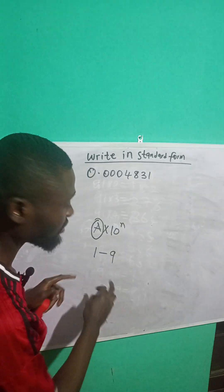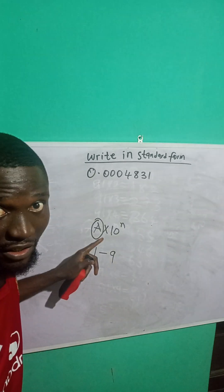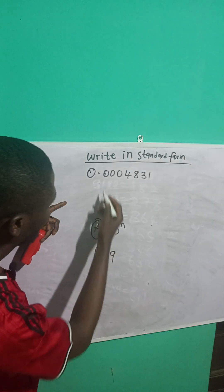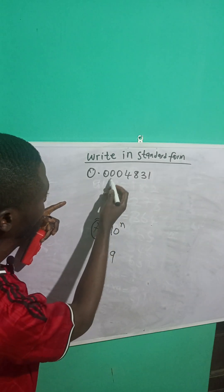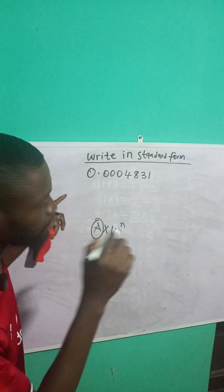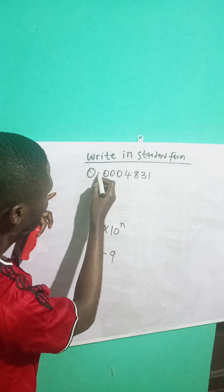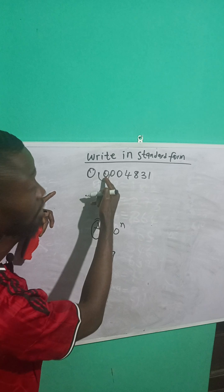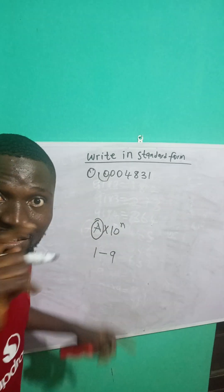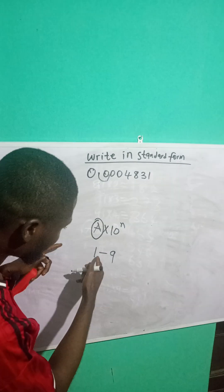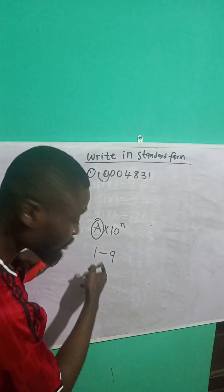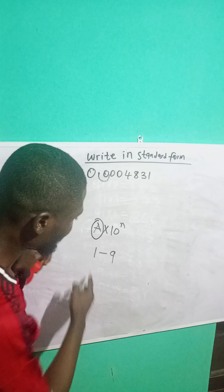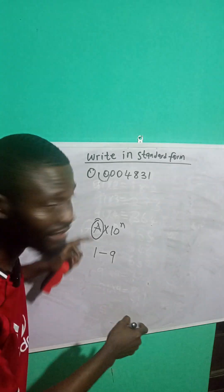Numbers within 1 to 9 represent 'a'. So from this formula, if I'm to shift from this decimal point, I will shift to 1 — I cannot stop at 0. Zero is not a whole number. I have to stop at a number between 1 to 9.